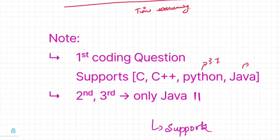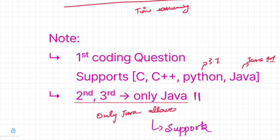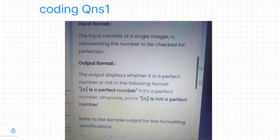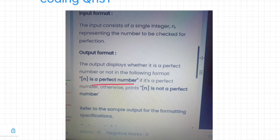One most important thing: the first coding question supports C, C++, Python, and Java. However, for the other two coding questions and the power coding section, only Java 11 is enabled — Java 11 is the only supported language for questions 2 and 3. For the first question only, they give you the option to select your preferred language. This is an important thing to note. The first question is based on finding the perfect number — it is very easy.